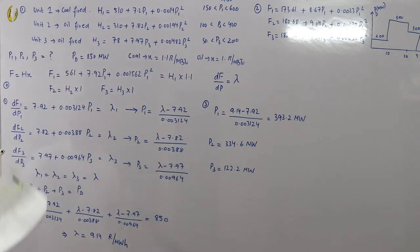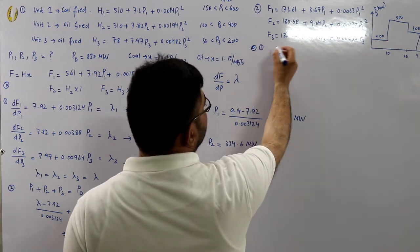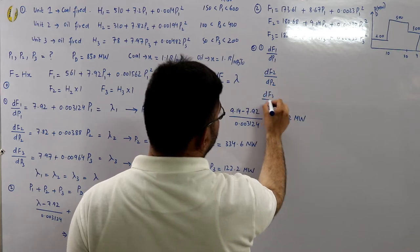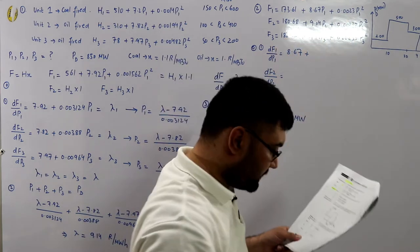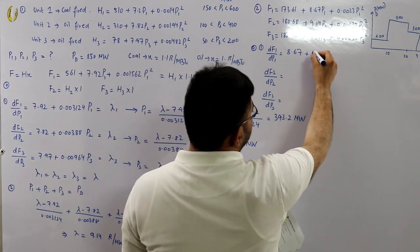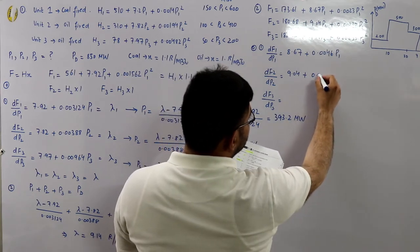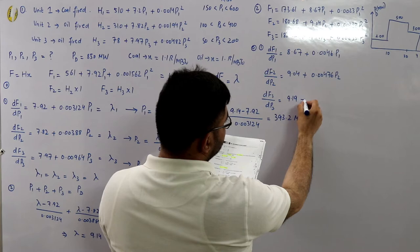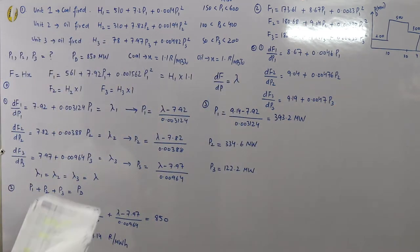Step number 0 is not needed since f is given directly. Step number 1: find the derivatives. df1/dp1 = 8.67 + 0.0046·p1, df2/dp2 = 9.04 + 0.00476·p2, df3/dp3 = 9.19 + 0.0047·p3.